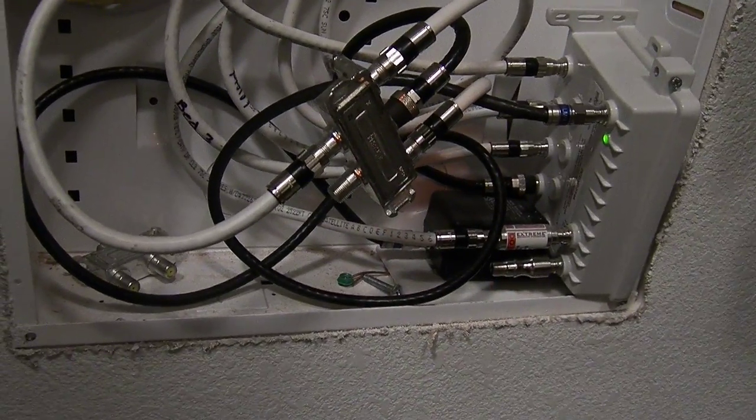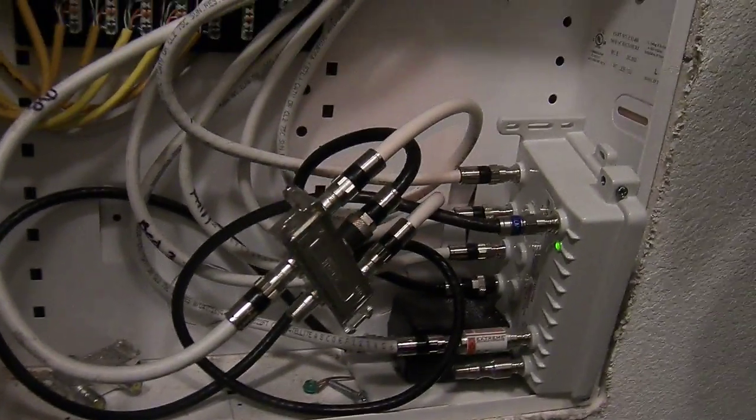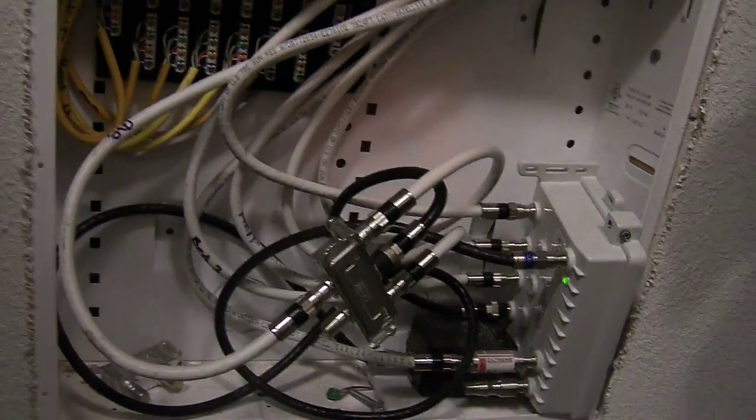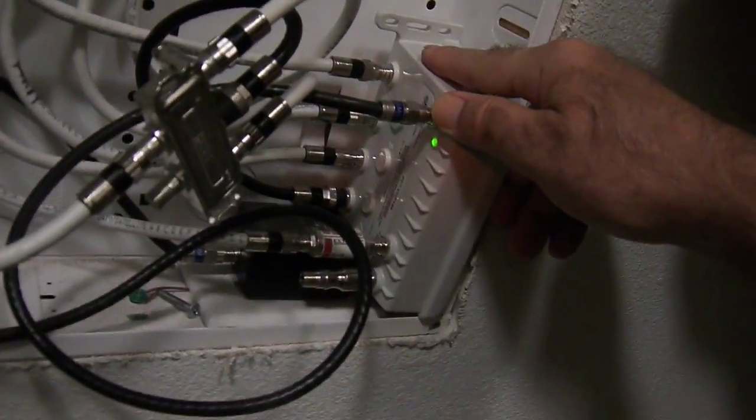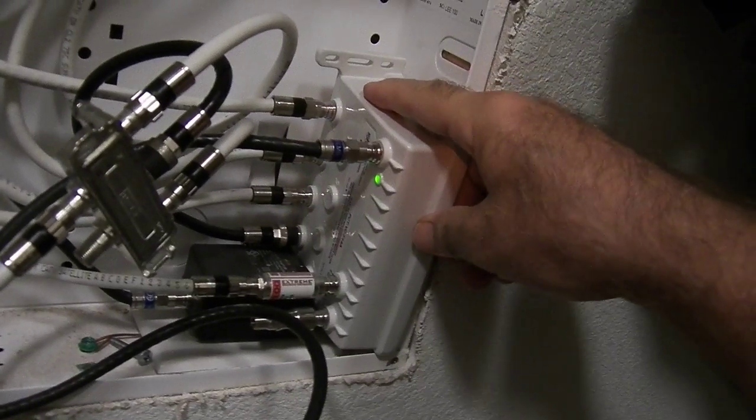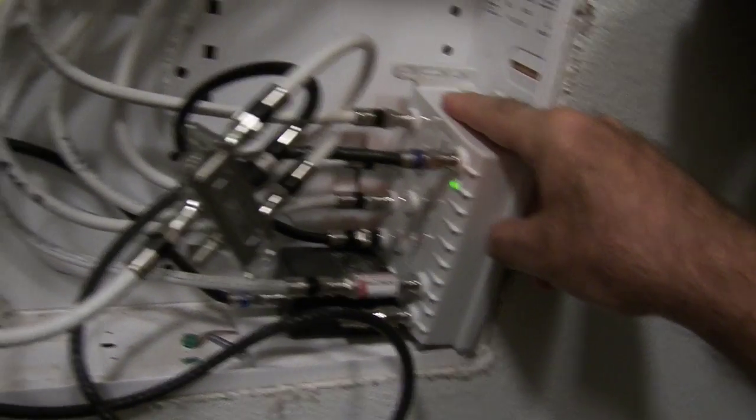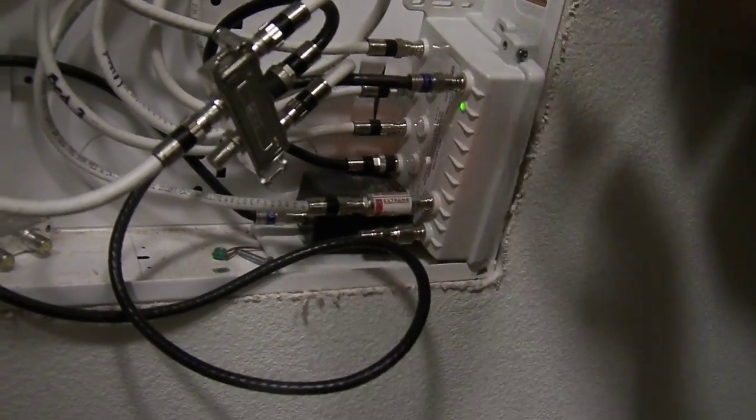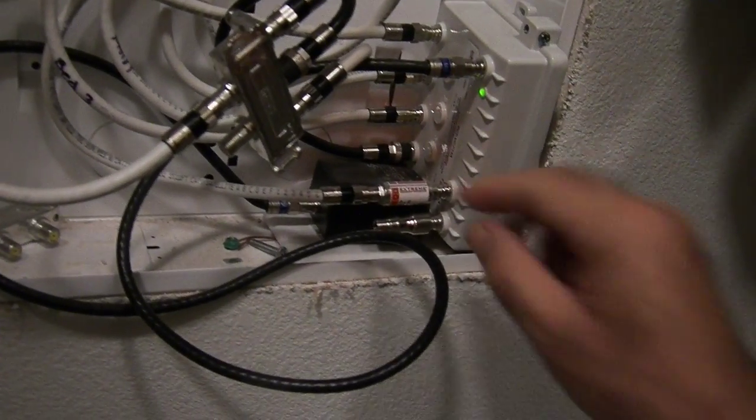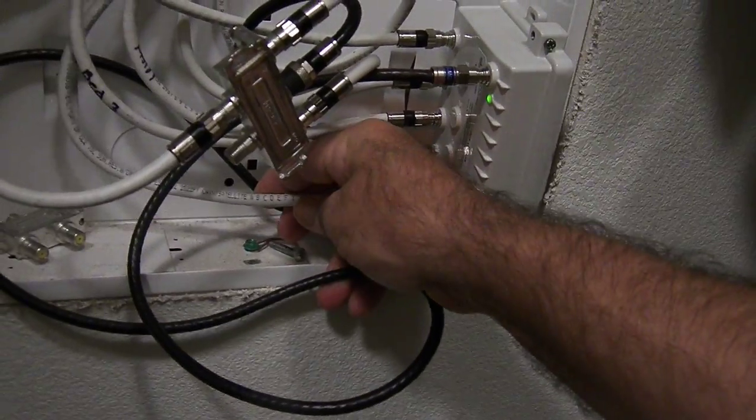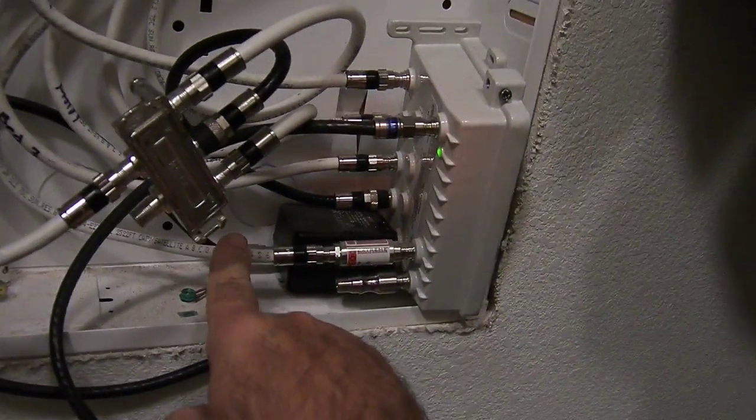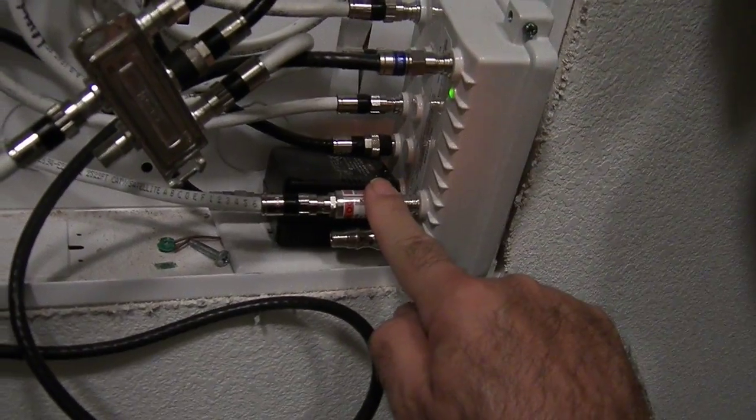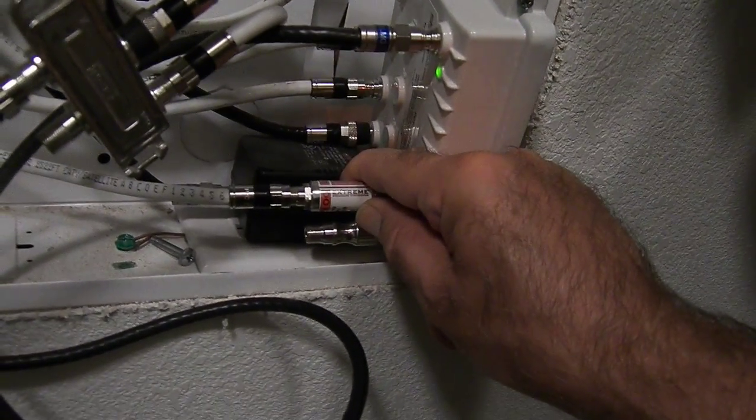Sometimes when you have cable from the street and the signal is weak, you want to put in an amplifier. Basically, the way I set this up is this amplifier is always running. In this situation, this wire here is from the street, this is the cable coming in.